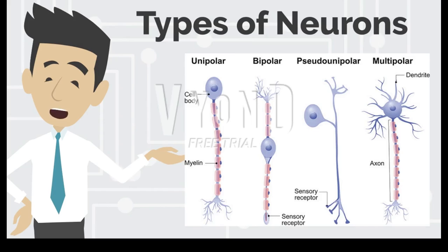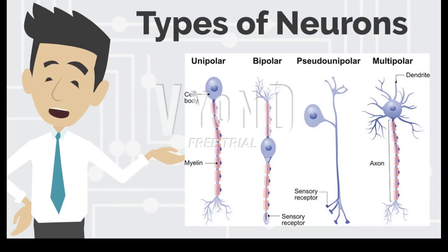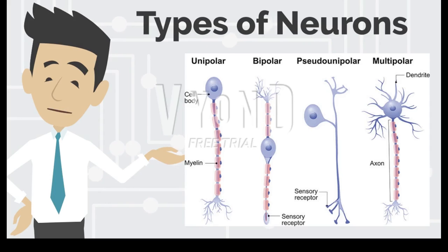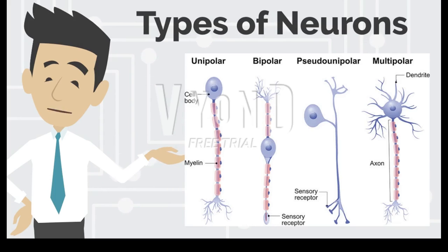The final neuron we're going to discuss is the interneuron. As the name suggests, interneurons are the ones in between — they connect the spinal motor and sensory neurons, as well as transfer signals between sensory and motor neurons. Interneurons can also communicate with each other, forming circuits of various complexity. They are multipolar neurons, just like motor neurons.